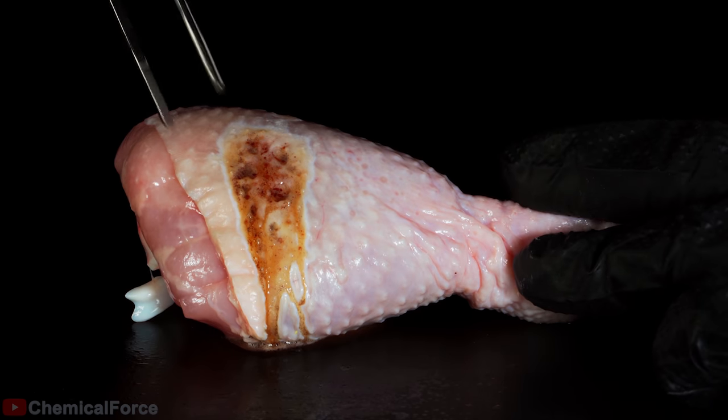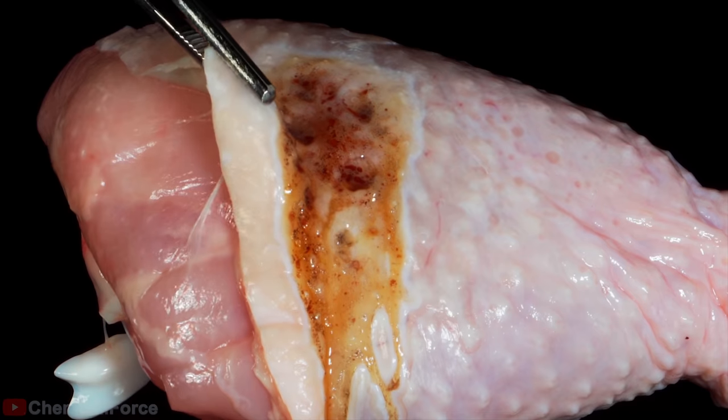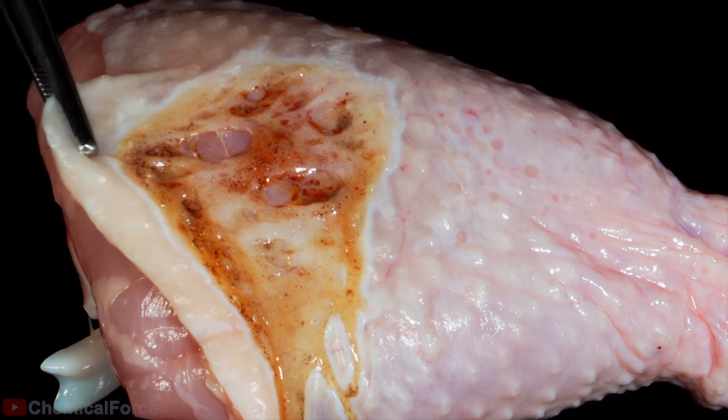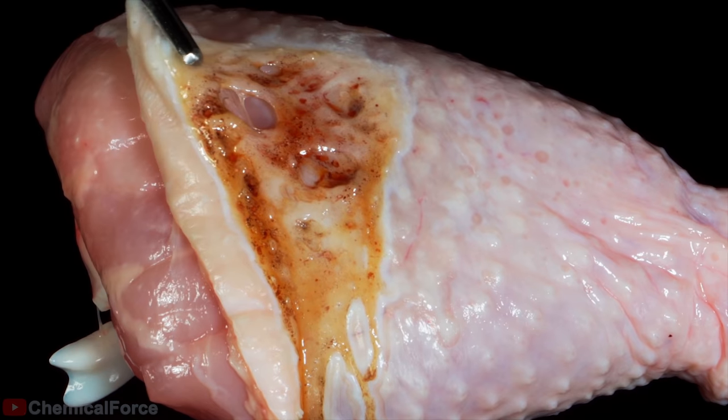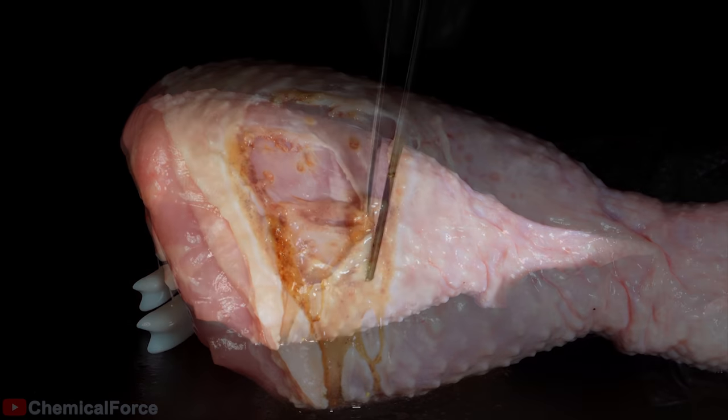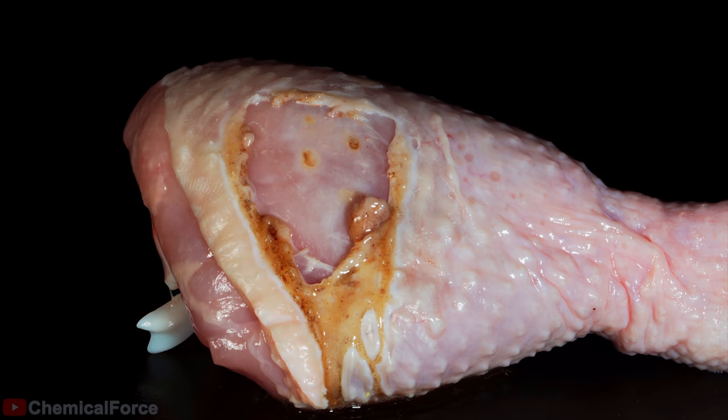The skin is very similar to human skin in terms of properties, so you might say the consequences of getting the superacid on an unprotected section of your body would be the same. Now it's time for the meat and for the bone.